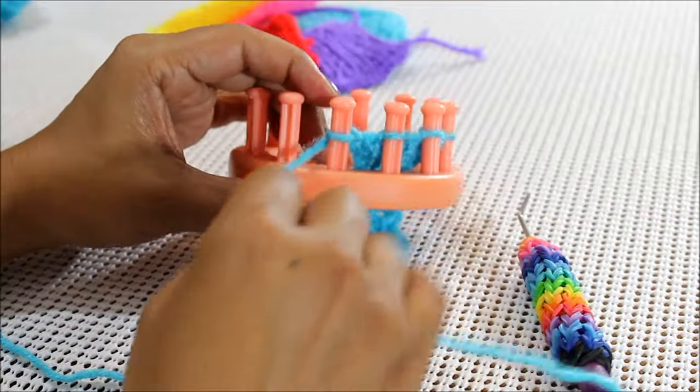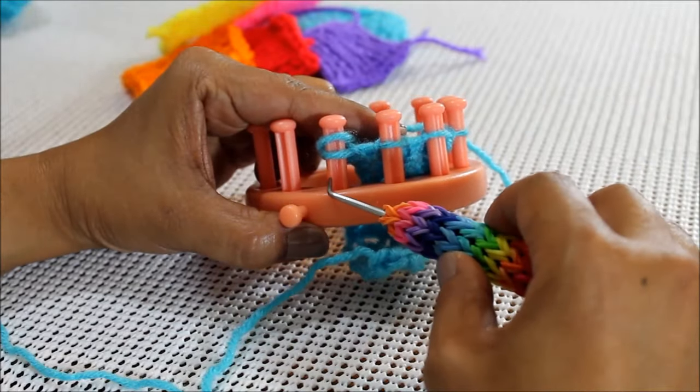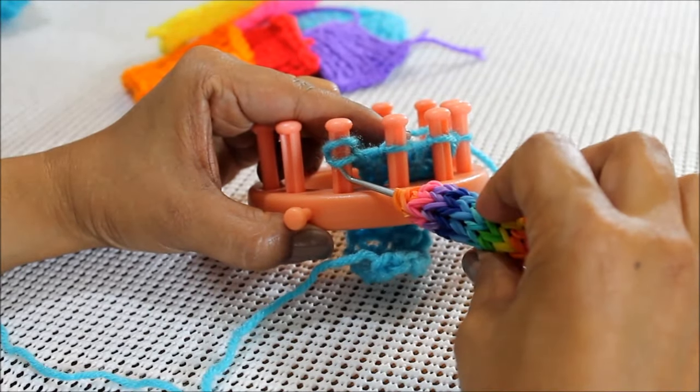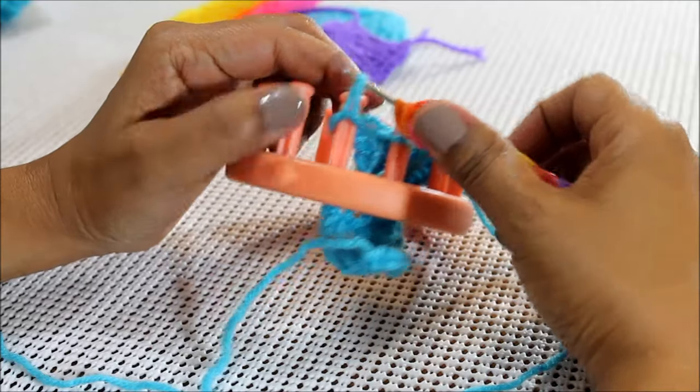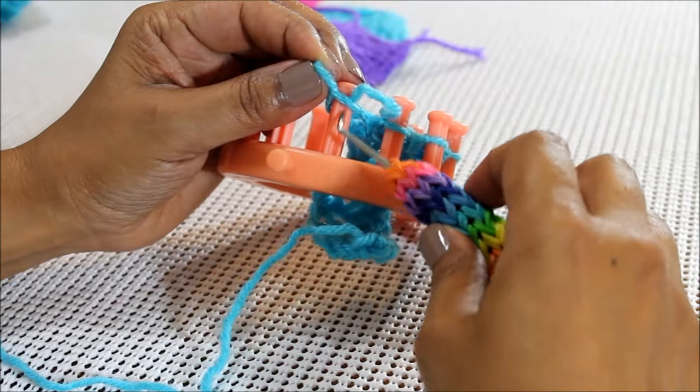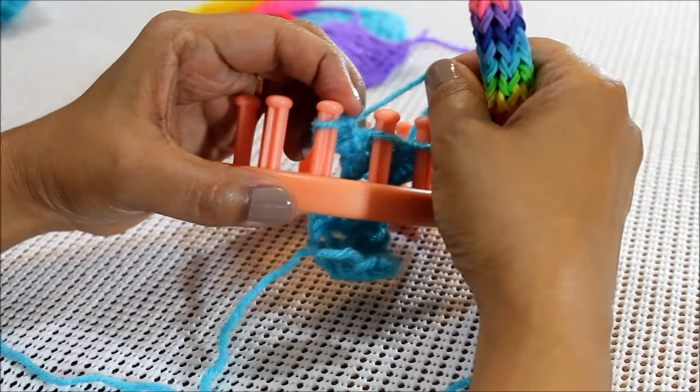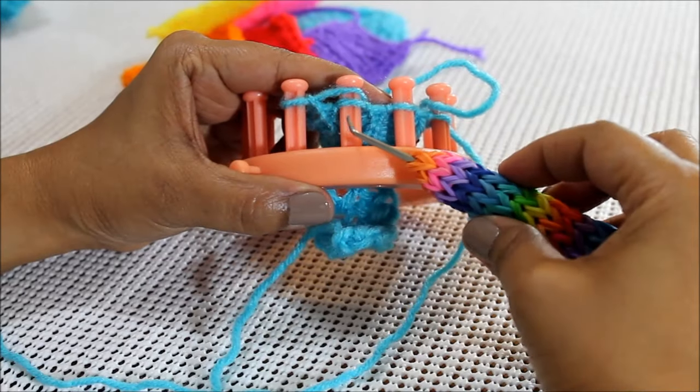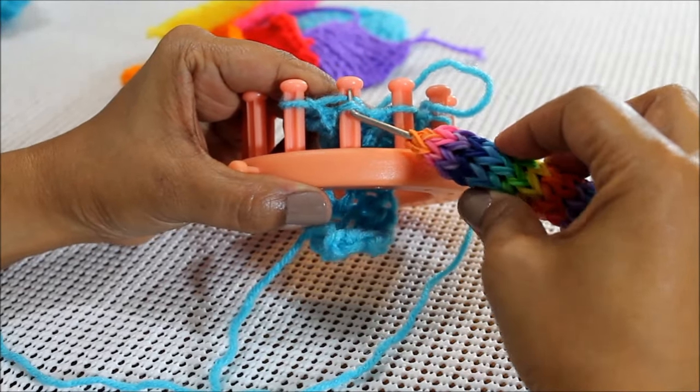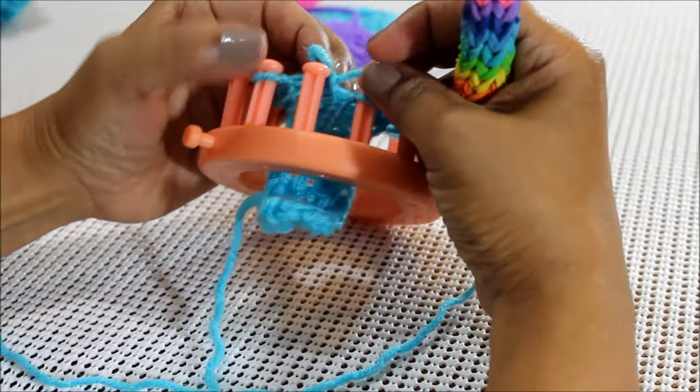Last but not least, the true version. You're going to take your working yarn and put it above the existing loop. Take your hook and bring it up through that existing bottom loop and scoop up your working yarn to create a loop. Now take the one you already had on the peg, take that loop off the peg, put the new one on and pull on your working yarn. Again, put that working yarn above the existing loop. Take your hook, come from the bottom, scoop up that working yarn to create a new loop. Take the old loop off, put the new loop on.